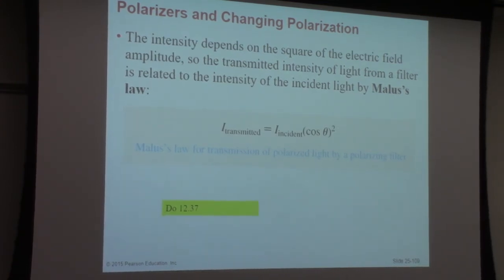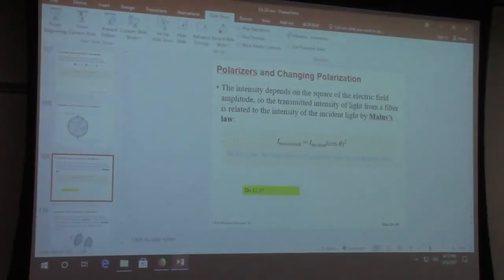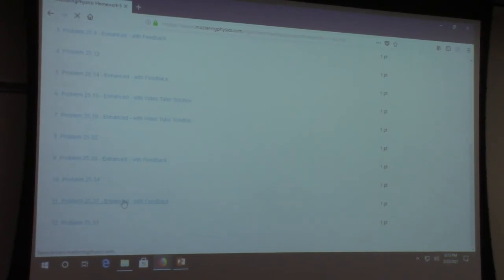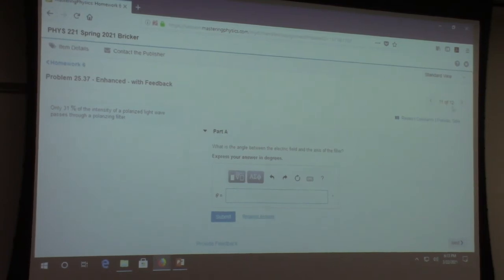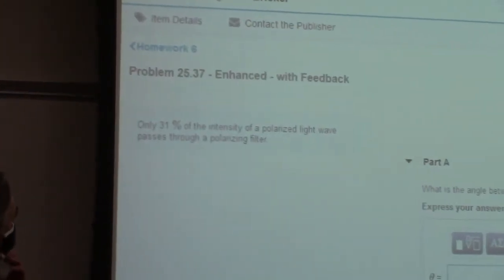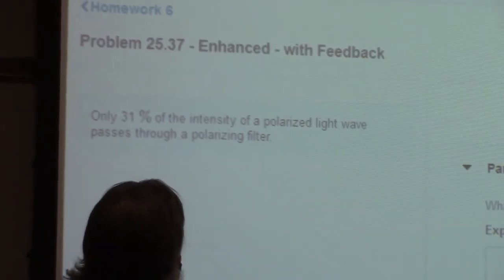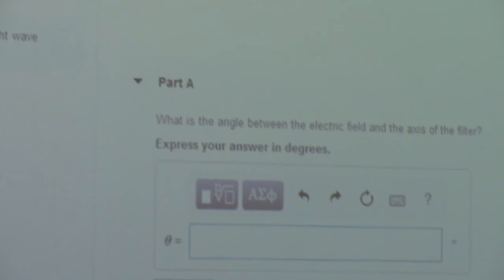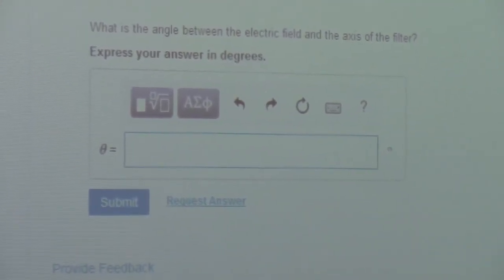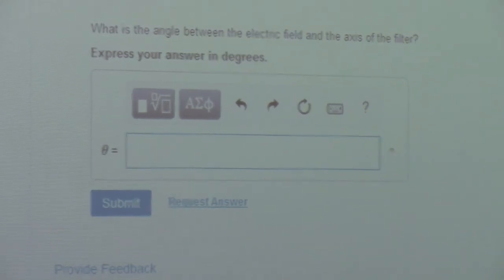Write the formula down real fast. Okay. So in this one, only 31% of the intensity of polarized light wave passes through a polarizing filter. All right. So it's already polarized. It hits another filter. Only 31% of the intensity passes through the filter. What is the angle between the electric field and the axis of the filter? So they're asking for what is theta in that formula. So they don't really tell you how much you started with or how much you end with. They just tell you that you only have 31% left. So how do you set something like that up? And you might have different numbers on yours, by the way.